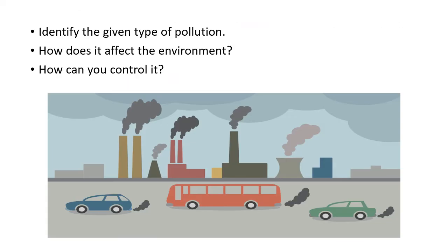Look at the given picture and identify the given type of pollution. How does it affect the environment? How can you control it? We can see the smoke from the industries and vehicles, so it is air pollution. How does it affect the environment and how can you control it? Please think and share your own ideas.